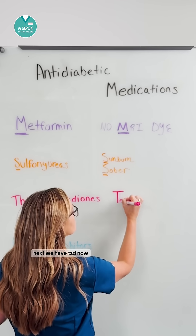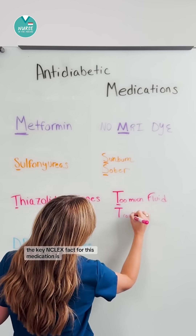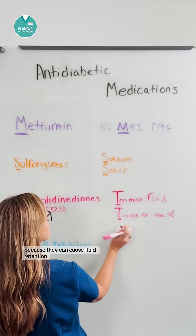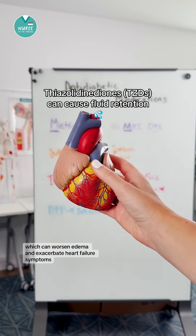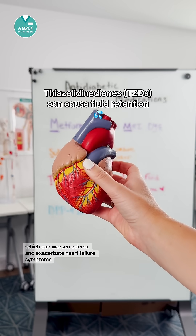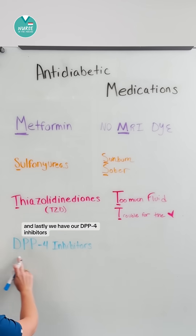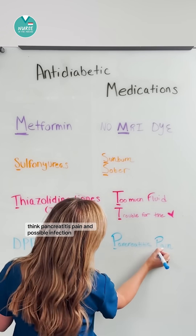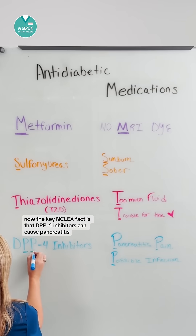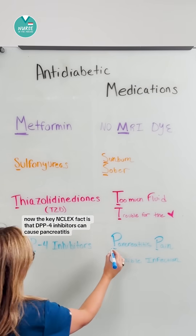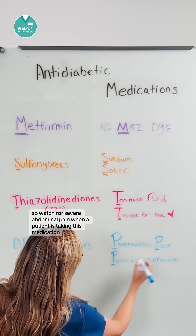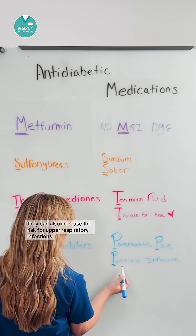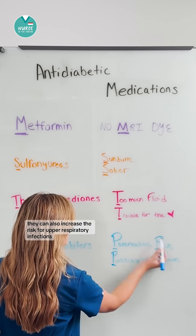For TZD, the key NCLEX fact is it should be avoided in heart failure patients because it can cause fluid retention, which can worsen edema and exacerbate heart failure symptoms. For DPP4 inhibitors, think 'pancreatitis pain and possible infection.' They can cause pancreatitis, so watch for severe abdominal pain, and they can also increase the risk for upper respiratory infections.